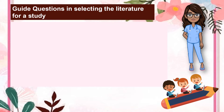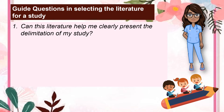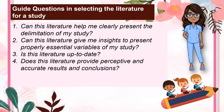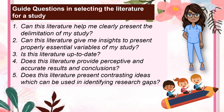Once the researcher has a clear problem as well as a rationale for conducting a study, he or she may begin selecting literature such as theories, conceptual framework, and related studies that will serve as the foundation of the work. In selecting literature for a study, the following questions should be considered: Can this literature help me clearly present the delimitation of my study? Can this literature give me insights to properly present essential variables of my study? Is this literature up to date? Does it provide perceptive and accurate results and conclusions? Does it present contrasting ideas which can be used in identifying research gaps?